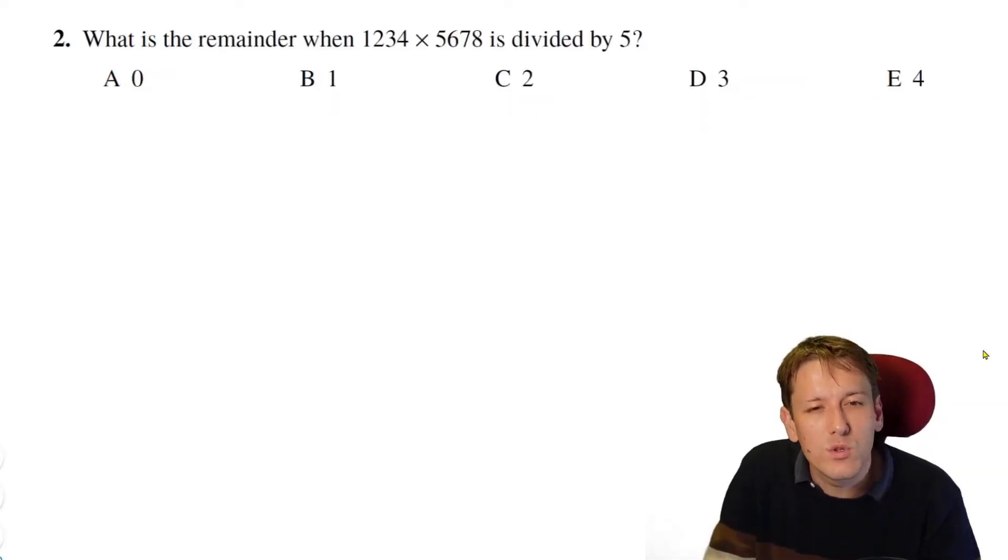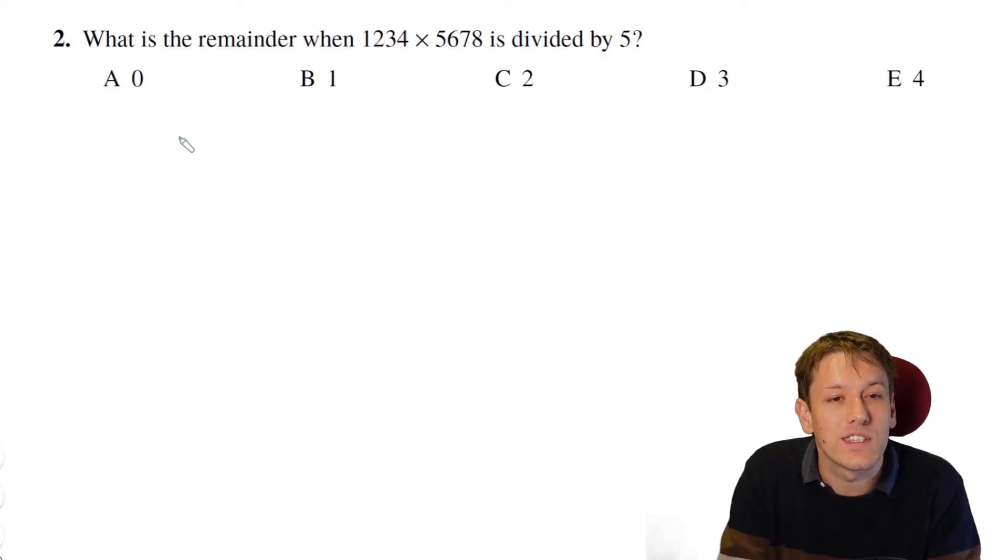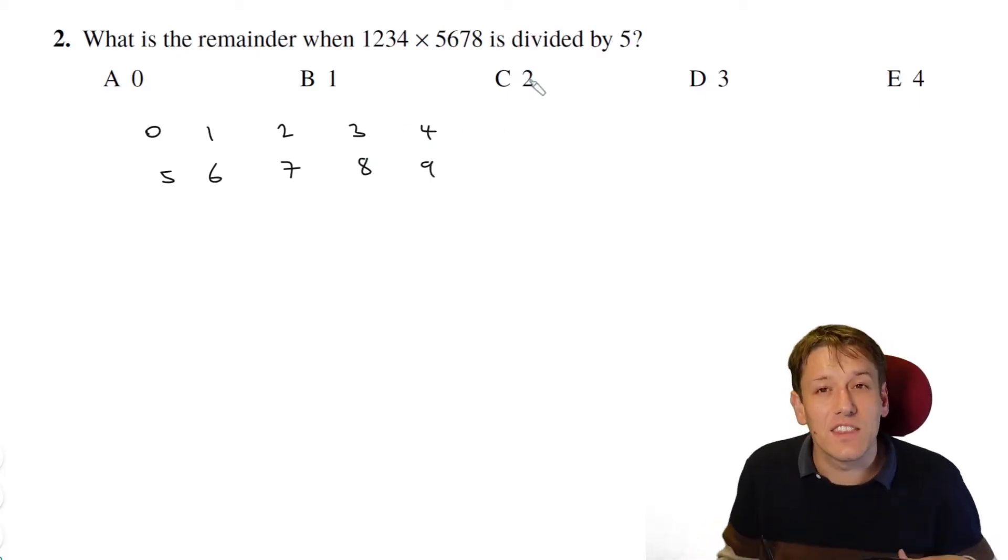What's the remainder when 1234 times 5678 is divided by 5? The key to this question is that we can know the remainder when something's divided by 5 just from the last digit of the number. So if the number ends in 1, 2, 3, or 4, then that will be the remainder. If it's 0, then it's a multiple of 5. If it ends in 5, the remainder will be 0. If it ends in 6, the remainder will be 1, and 7, the remainder will be 2, etc. And the other key thing, something that we've been using right from the Junior Math Challenge courses here, is this idea that when you multiply two numbers together, the product of the last digits is the last digit of the product.